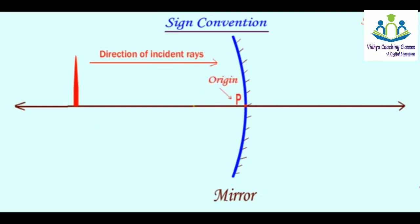Origin means here, all directions towards right and towards left will be decided, which we also call the principal axis.